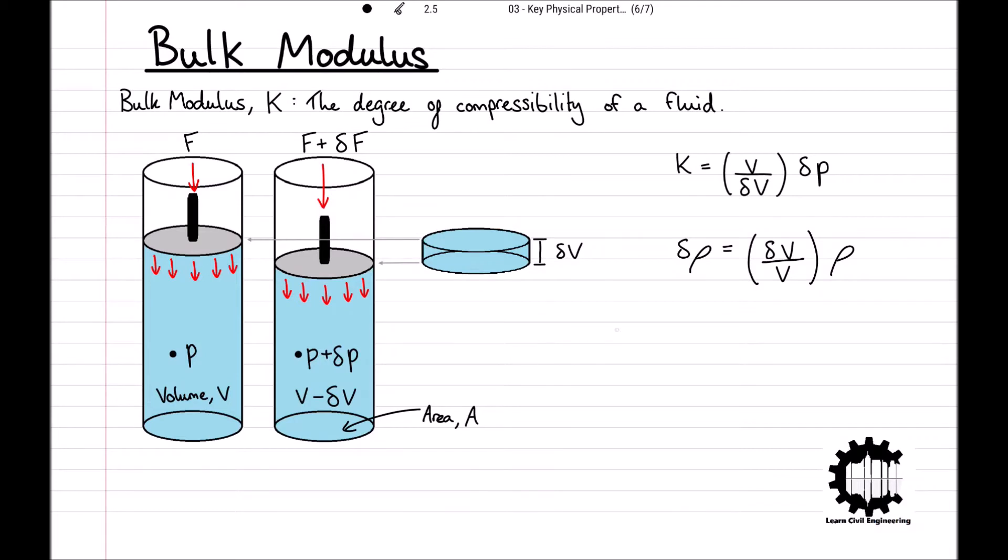Therefore, bulk modulus can also be defined as K equals rho over change in rho times by change in P. Bulk modulus has dimensions of M L to the minus 1 T to the minus 1 and SI units of kilograms per meter per second squared or newtons per meter squared or pascals.